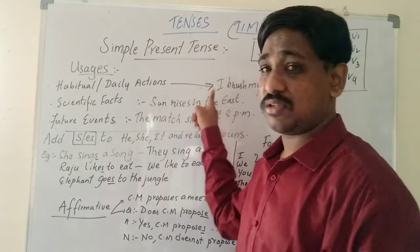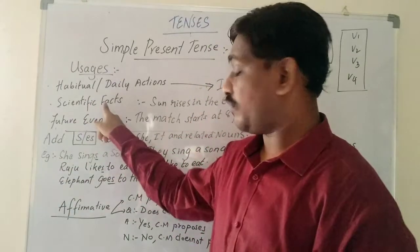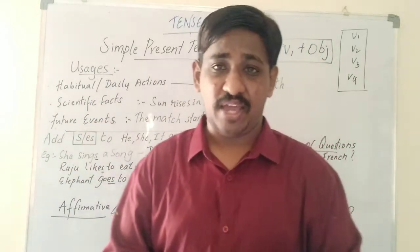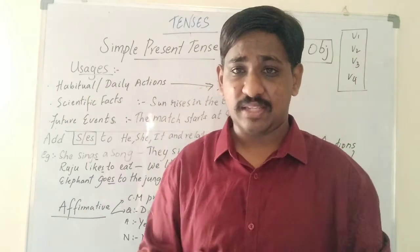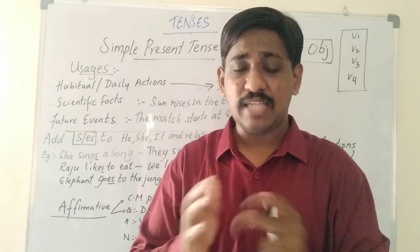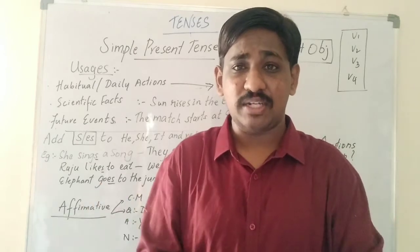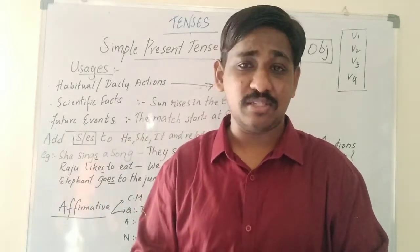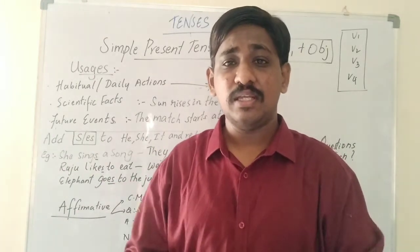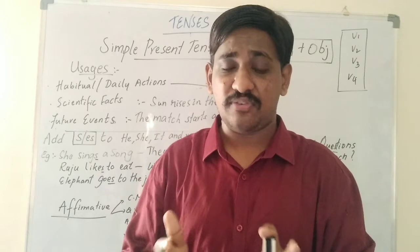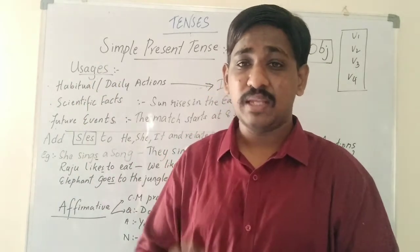Habitual actions or daily actions, we use in simple present tense. The second way of using: to express scientific facts — scientifically proven facts. For example, sun rises in the east; it's always the same, it's proven. Water boils at 100 degrees — it's proven. Glass breaks — it's proven. All proven or scientific facts will be used in simple present tense.